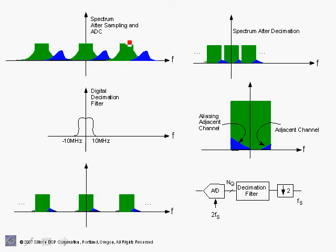Once we sample the analog signal — assuming perfect sampling with ideal impulses — the spectra are repeated at the sampling rate. We are sampling at 40 megahertz (2 × 20 MHz), so spectral copies appear at ±40 megahertz. In an actual system a sample-and-hold produces a sinc roll-off, but we are not showing that here.